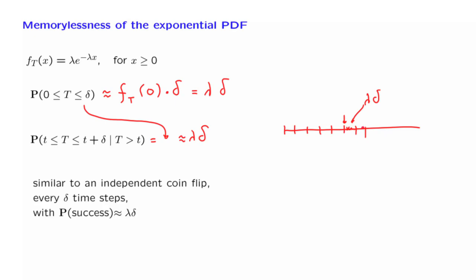This is like flipping a coin once every delta time steps. There is a probability lambda delta that there is a success in that coin flip, where success corresponds to having the light bulb actually burn down. And the exponential random variable corresponds to the total time elapsed until the first success.